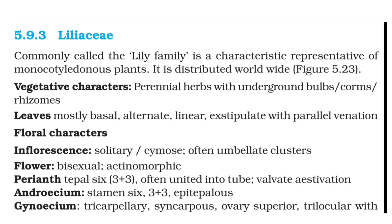Liliaceae, or the lily family, is a characteristic representative of monocotyledonous plants. In vegetative characters, perennial herbs are mentioned. The word 'perennial' describes the lifespan. Plants are of three types based on lifespan: annual plants complete their life cycle within one season or one year; biennial plants require two years; and perennial plants are long-living. These herbs are made perennial by perennating structures like underground bulbs, corms, and rhizomes.